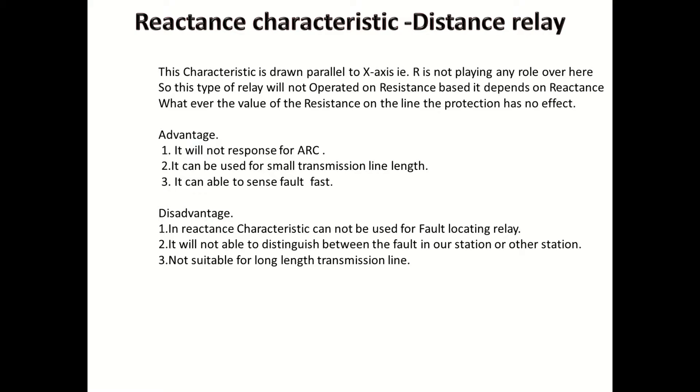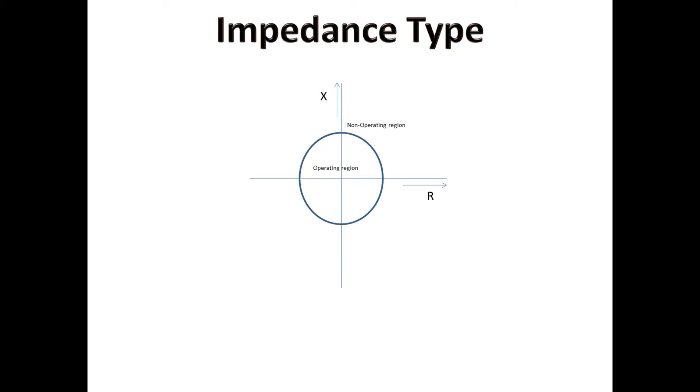Now, we can see the impedance characteristics of the relay. This characteristic is drawn as a big circle by keeping the center at zero point of x-axis and y-axis, i.e. reactance and resistance. The impedance will cover both resistance and reactance of the transmission line. The relay is best for using medium line length of transmission line.